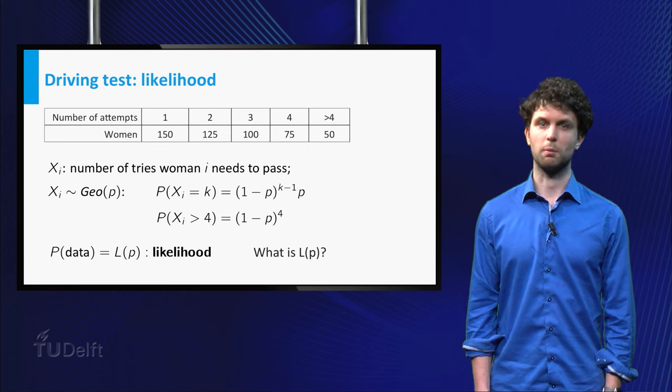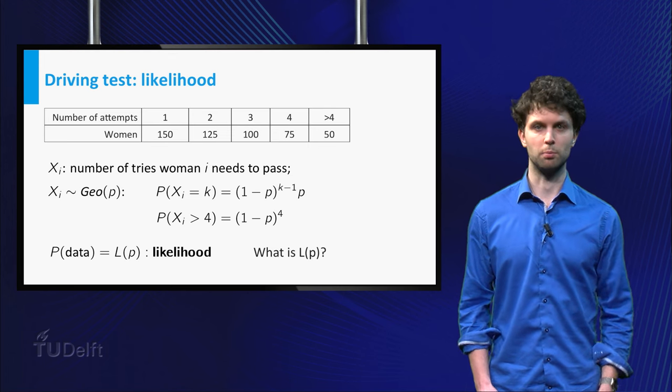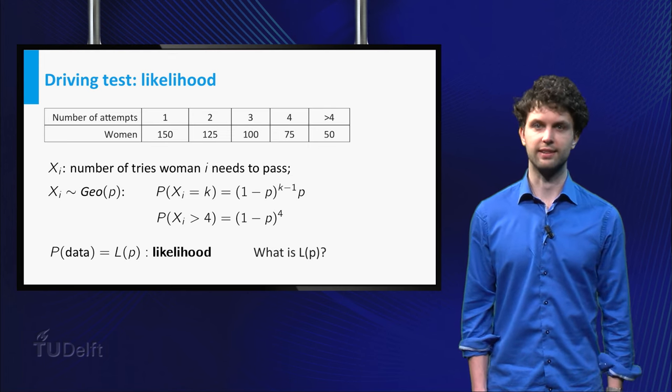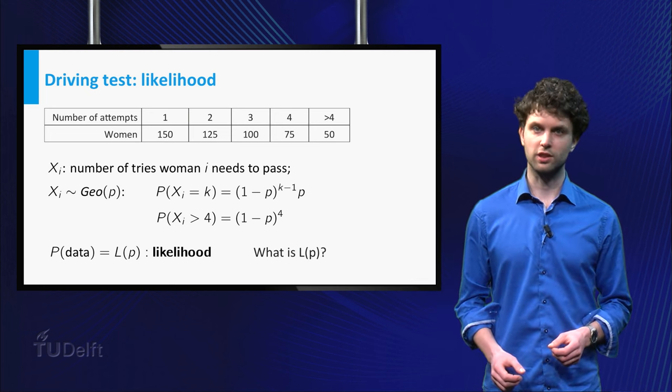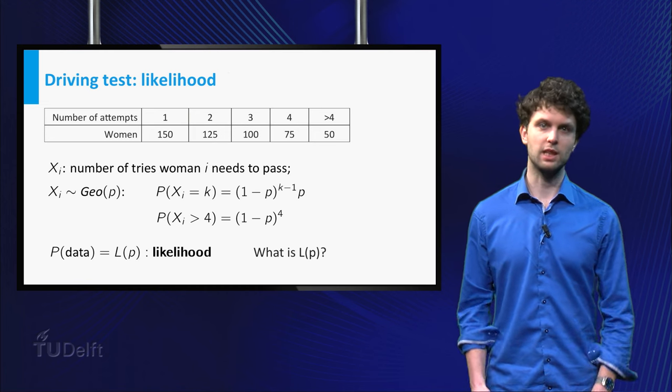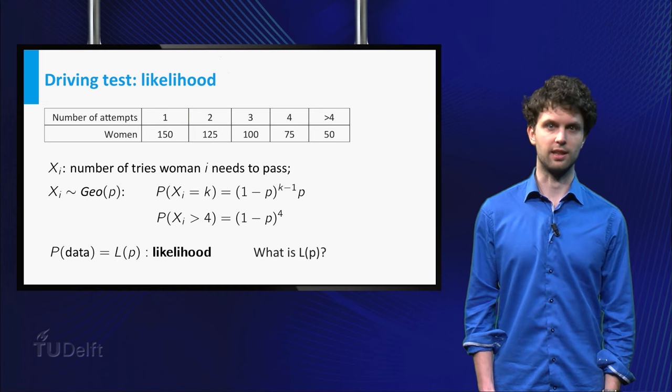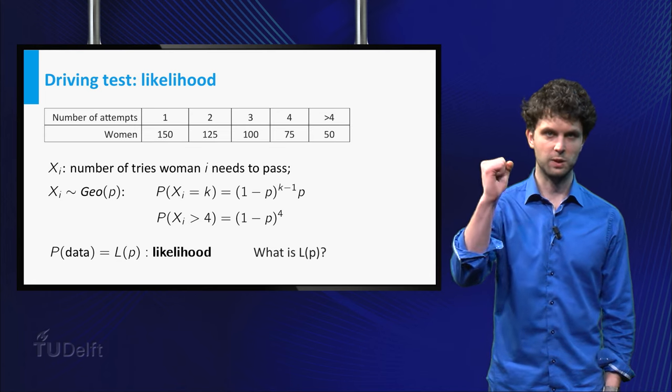In order to apply the maximum likelihood principle, we will have to compute the probability of observing the data as a function of P, and then maximize for P. This function is called the likelihood, that is why we use capital L to denote it. Let's find this function L of P.